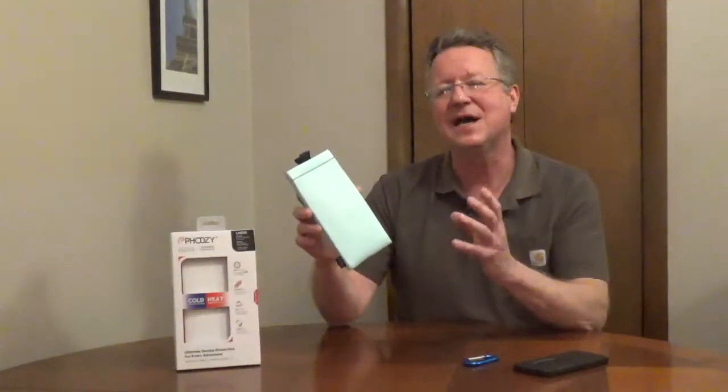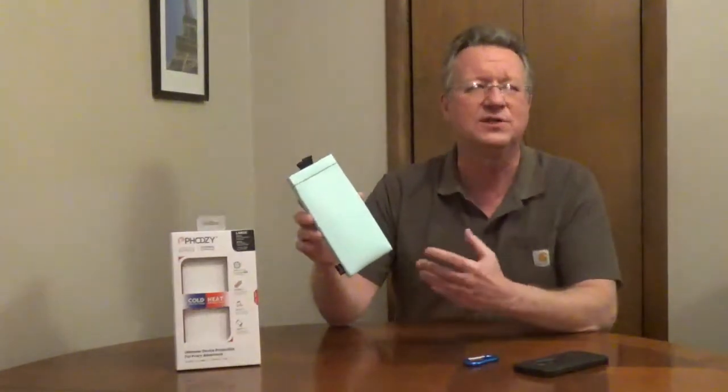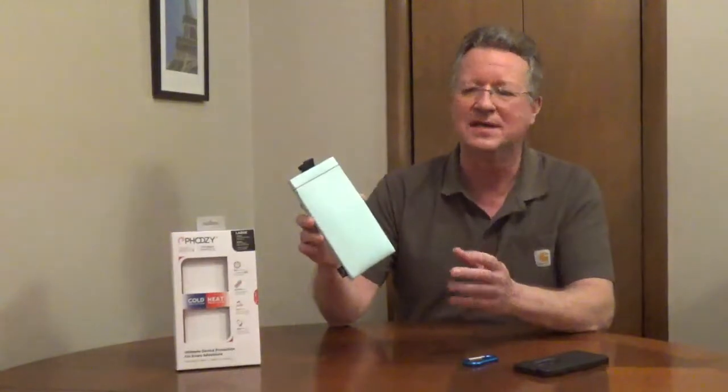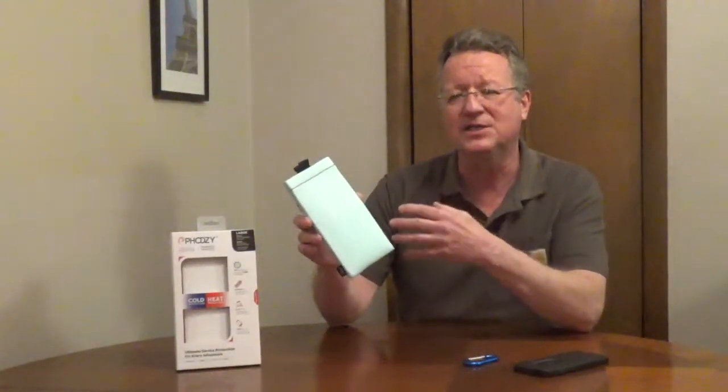Direct sunlight and high heat can cause your phone to shut down, shorten your battery life, or damage your battery. The inner layers will insulate your phone.